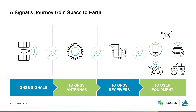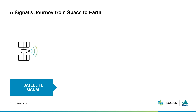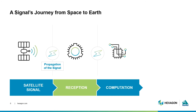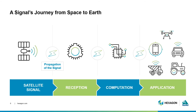The signal is used in autonomous vehicles, precision agriculture, defense applications, and even in the average person's cell phone. An alternative way to consider the signal's journey is through these steps: from satellites, to propagation or broadcast of a signal, to reception, computation, and application.